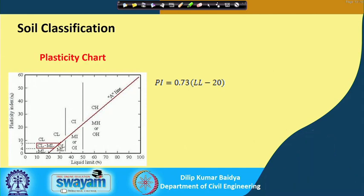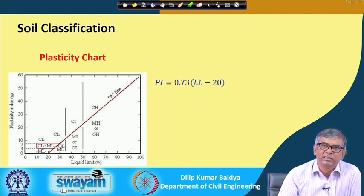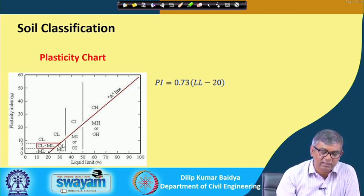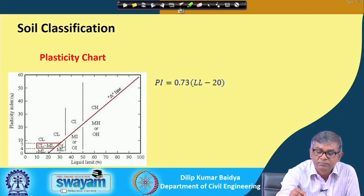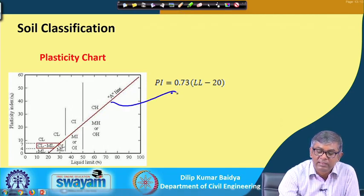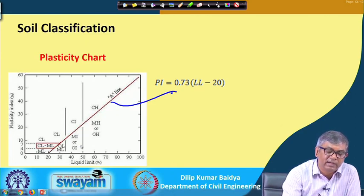The plasticity chart is based on the plasticity characteristics of fine-grained soil — consistency limits like liquid limit and plastic limit, which will be discussed in subsequent slides. Based on the calculation of plastic limit and liquid limit, we can find out the plasticity index. The plasticity chart has liquid limit on one axis and plasticity index on the other axis, with definite boundary lines.